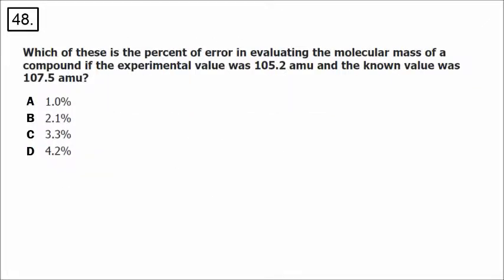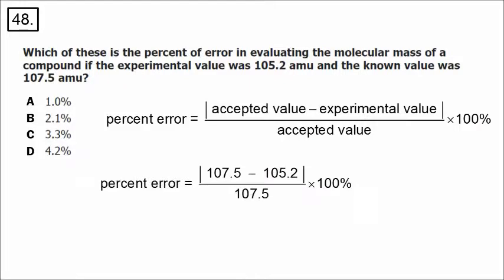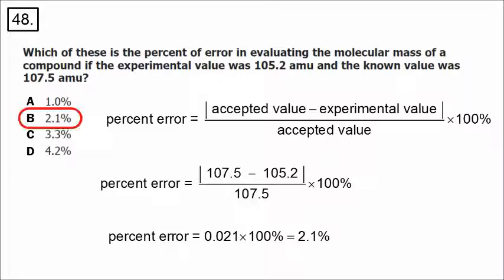Number 48 involves the formula for percent error. Take the absolute value of the difference between the measurements, divide by the true (accepted) value, and multiply by 100. The difference is 107.5 minus 105.2. Divide by the true value of 107.5, then multiply by 100. The result is 2.1 percent error.